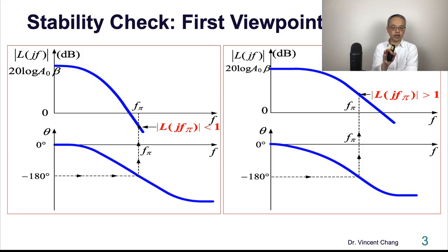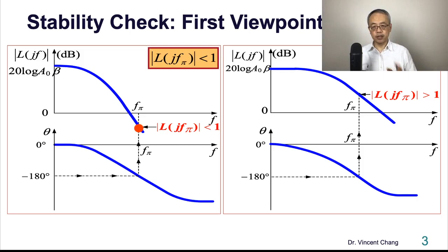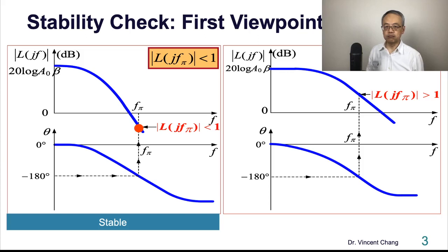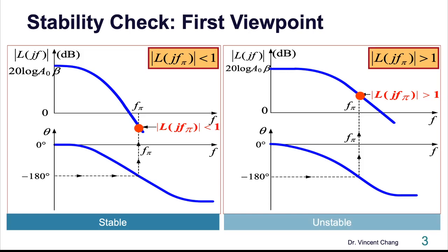So how to check stability? There are two ways. The first viewpoint focuses on f_pi, omega_pi. At f_pi, if the magnitude of the loop gain is less than one, then it's stable. On the other side, if at this frequency it's greater than one, then the circuit is unstable.